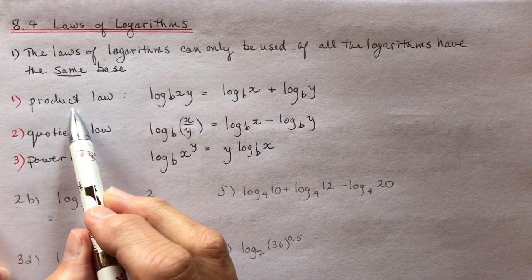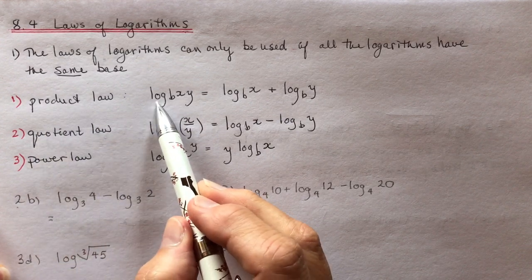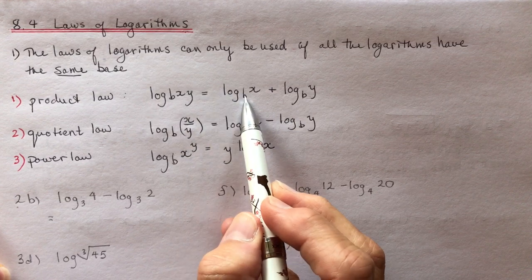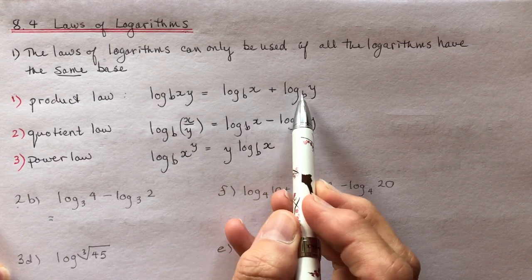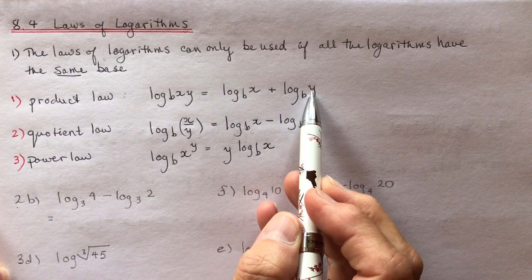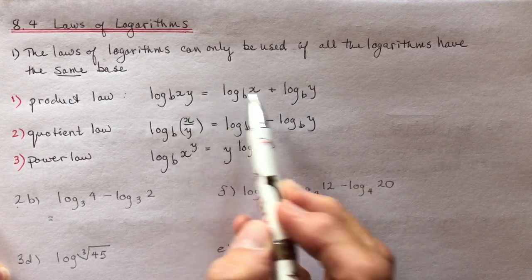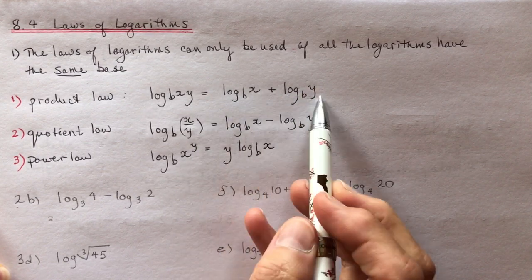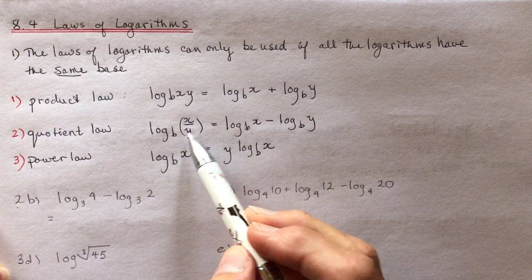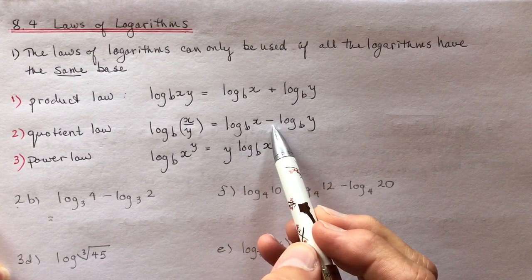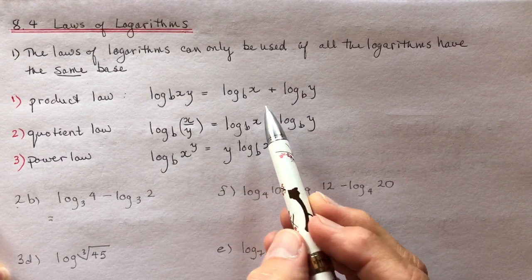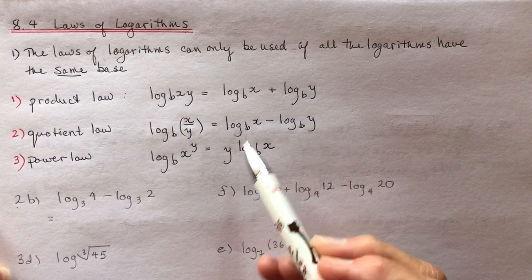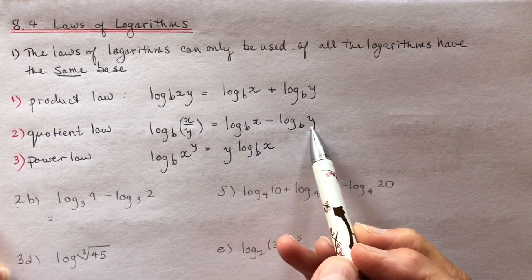Let's look at the laws. The product law says the log base b of x times y is equal to the log base b of x plus the log base b of y. So if you're multiplying, you add them as separate logs. If you're dividing, you subtract them. It's kind of like exponent laws — when multiplying with the same base you add the exponents, and when dividing you subtract them.